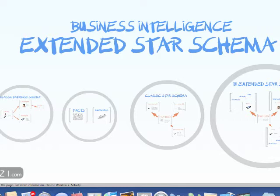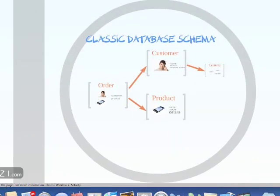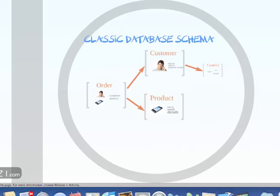Let's go ahead with the Extended Star Schema information. First up is the classic database schema. Normally for relational databases you would have highly normalized tables, where one table has information about a business object and then references other objects by using foreign keys.